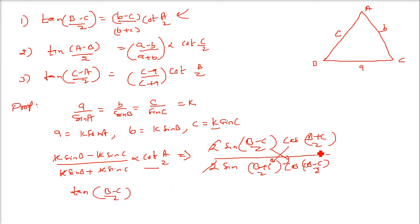And this one, cos (b minus c) by sin (b plus c) by 2 will be cot of (b plus c) by 2. You have this cot a by 2 also.